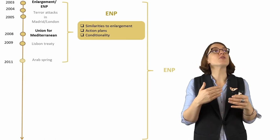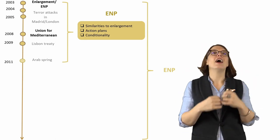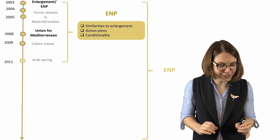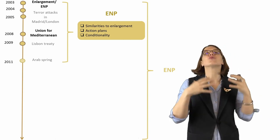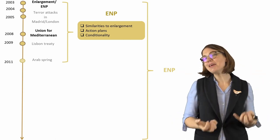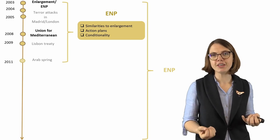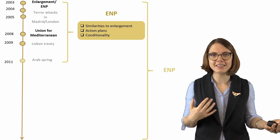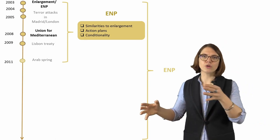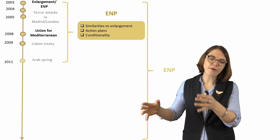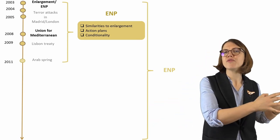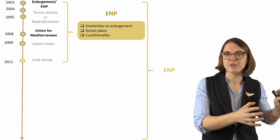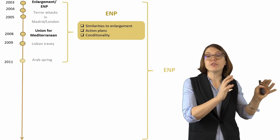A lot of the discourse by this time — and bear in mind that in 2004 the concept of 'normative power Europe' was coined — spoke about democratization and transformation. But many countries in the south were authoritarian regimes not willing to democratize. So the EU could talk a lot about democracy and civil society support, while actually giving support to regimes far from these ideals. This reflects the tension between norms and interests.